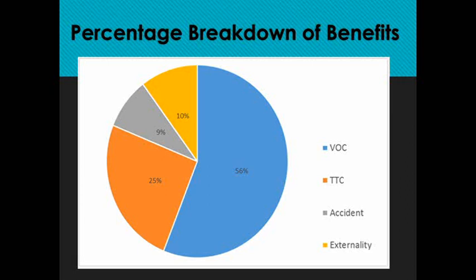Looking at the percentage breakdown of benefits: vehicle operating costs make up the majority at 56%, followed by travel time costs at 25%. Externalities are actually higher than accident costs because of the relationship between fuel consumption and emissions. Accident costs are the lowest component, reflecting similar safety standards across both roads when assessed in terms of vehicle kilometres travelled.